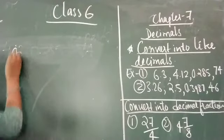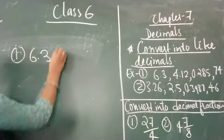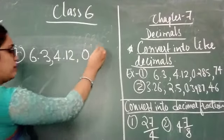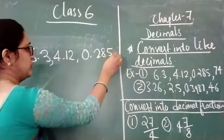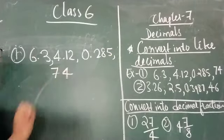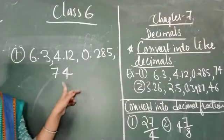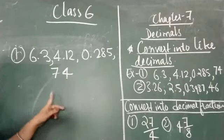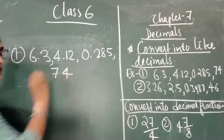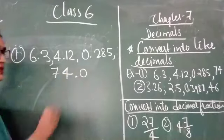So let us solve. The numbers given are 6.3, 4.12, 0.285, and 74. First observe these — 74 is not given in the decimal form, so first we have to convert this 74 into decimal by putting a decimal point, making it 74.0.